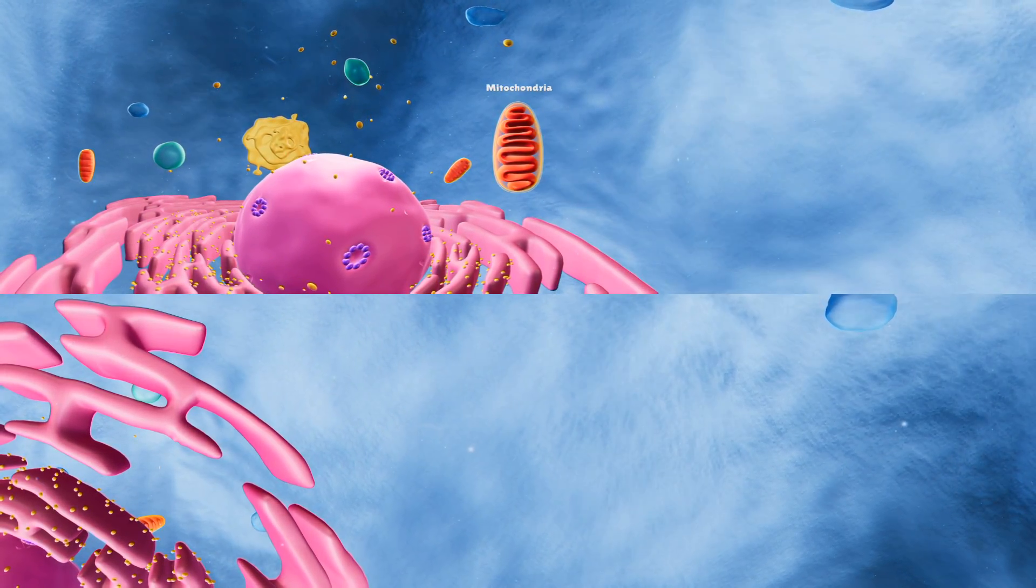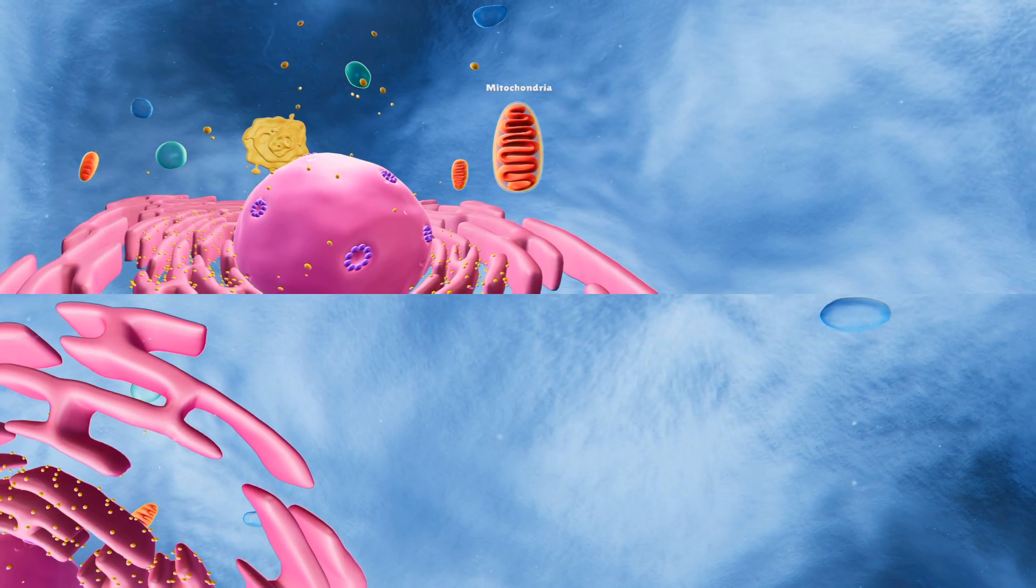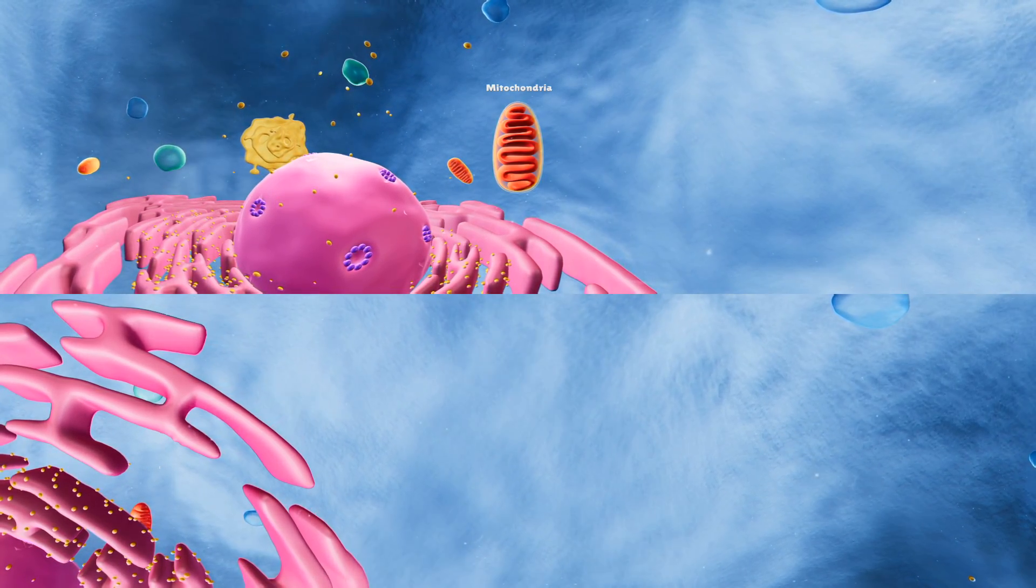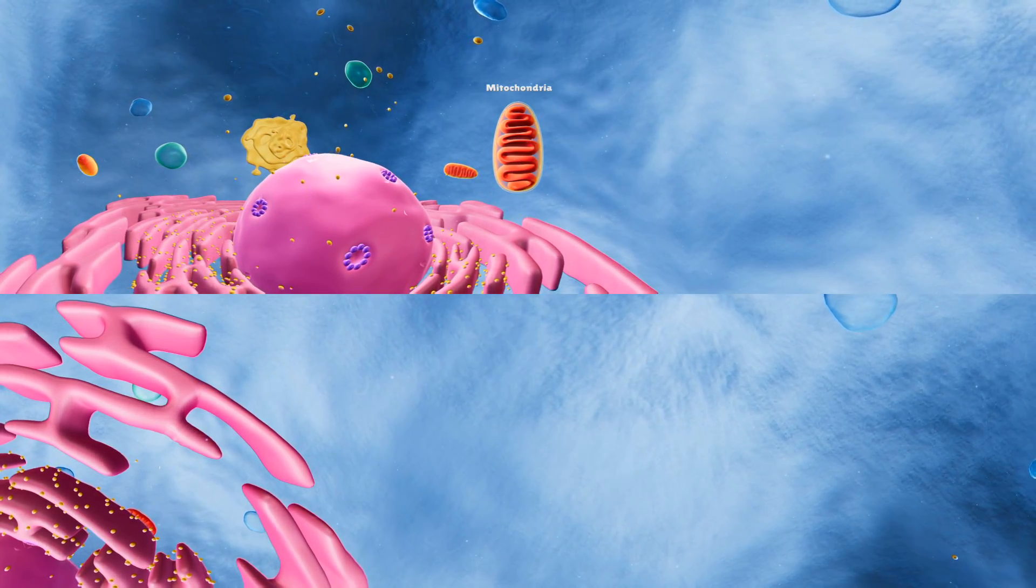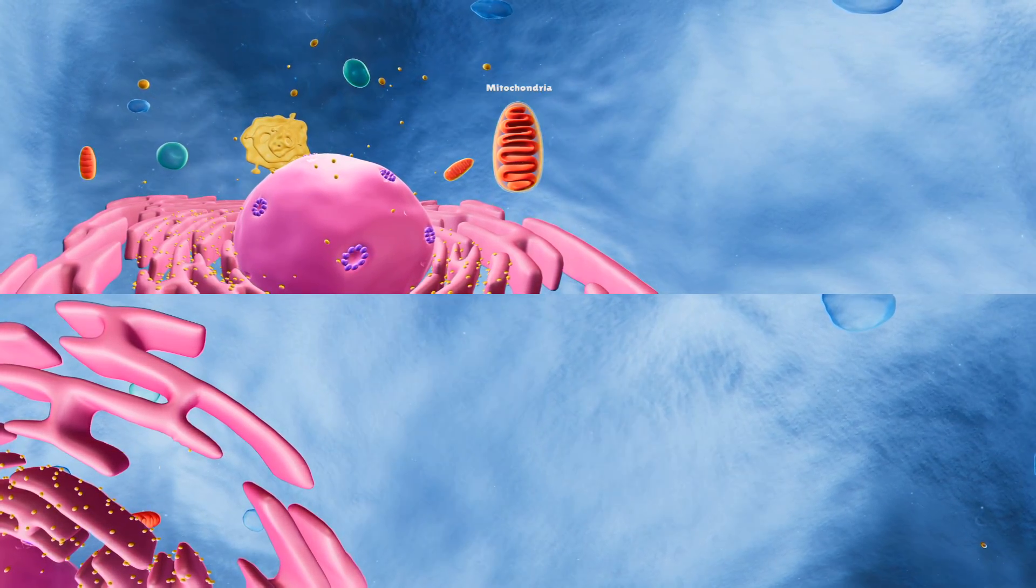We eat food to make sure that we have enough energy to get through the day. How does the cell get its energy? A double membrane-bound organelle called the mitochondrion provides the cell its energy. Let's look at the different parts of the mitochondrion to see how it creates energy.